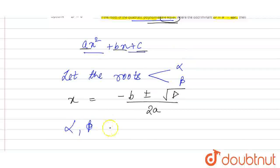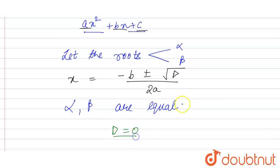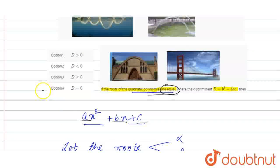Agar alpha and beta are equal, then d, the discriminant, d equal to hona chahiye 0 ke. If we see, alpha and beta are equal, then alpha is equal to beta is equal to minus b by 2a, if d is equal to 0. So, discriminant ki value 0 honi chahiye, iska matlab option 4, humaara right answer, thank you.